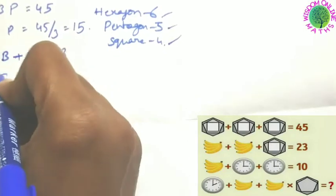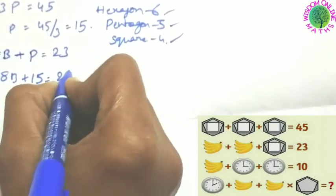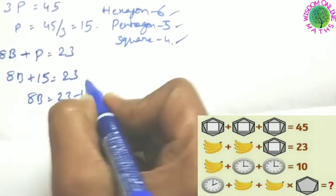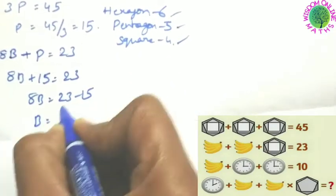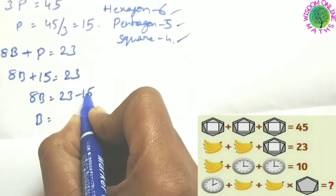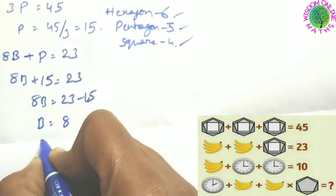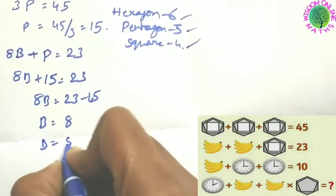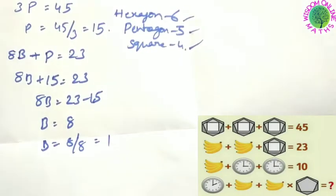The polygon value is 15, so substitute: 8B plus 15 is equal to 23. 8B is equal to 23 minus 15. B is equal to 8. Banana value is equal to 8 divided by 8, which equals 1.